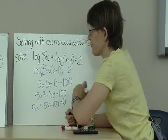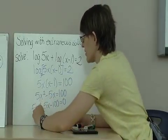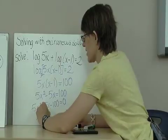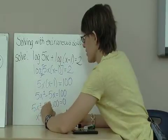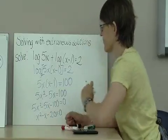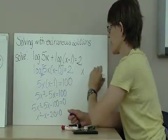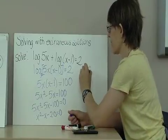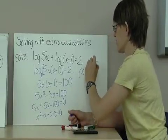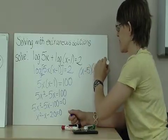5x squared minus 5x equals 100. And I'll change this over to 5x squared minus 5x minus 100 equals 0. So that I can factor it. I can divide all of my terms by 5, giving me x squared minus x minus 20 equals 0.